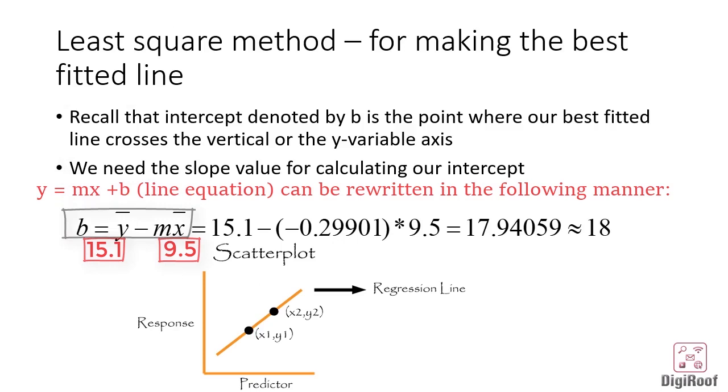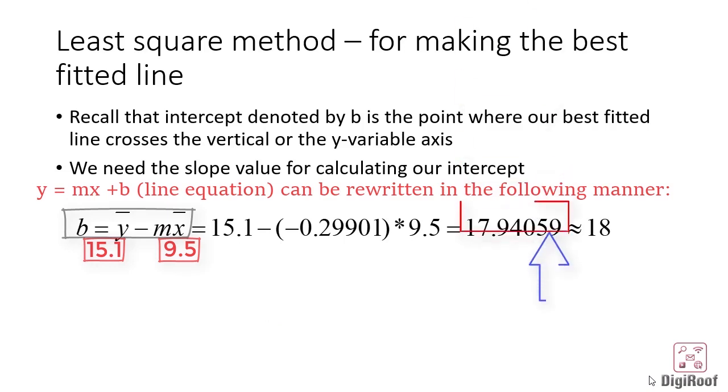This is because the mean of the predictor and the response variable is present on the best fitting line. If we place the mean of the x variable, mean of the y variable and the slope we calculated above in this equation, we would get the intercept as 17.94059, which again for the sake of simplicity can be rewritten as 18.